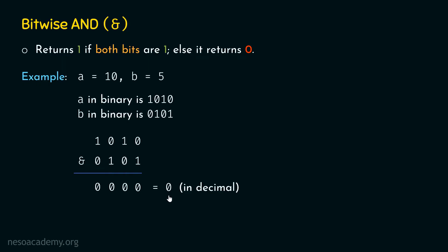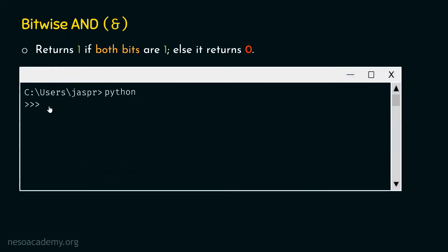Let's verify this with the Python interpreter. We open the command prompt and type A equal to 10, then hit enter. Then type B equal to 5 and hit enter. Then type A ampersand B and hit enter — we will get 0 as the result. The result of 10 & 5 is 0. By default, the Python interpreter always returns a decimal value.